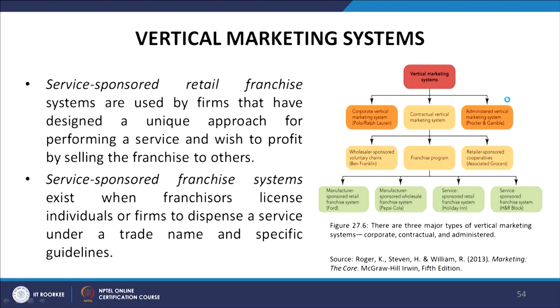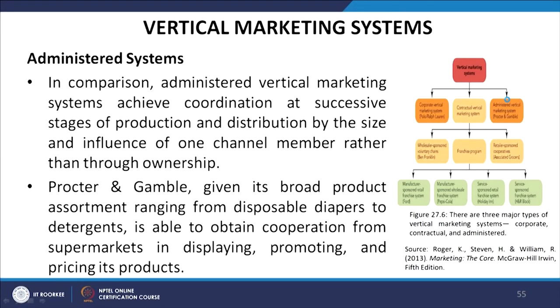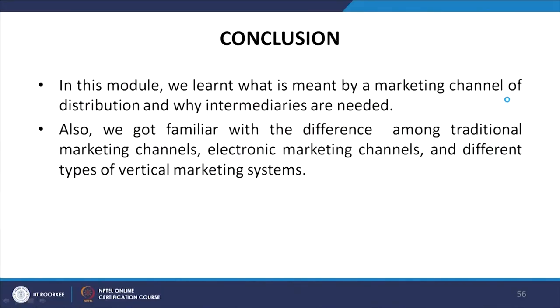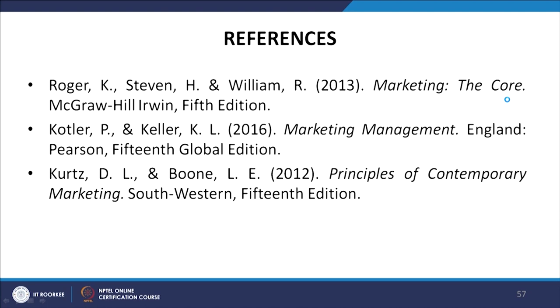In the administered vertical marketing system, coordination at successive stages of production and distribution is achieved by the size and influence of one channel member rather than through ownership. For example, Procter and Gamble, given its broad product assortment ranging from disposable diapers to detergents, is able to obtain cooperation from supermarkets in displaying, promoting, and pricing its products. In conclusion, this module covered marketing channels of distribution, why intermediaries are needed, and the differences among traditional, electronic, and vertical marketing systems.